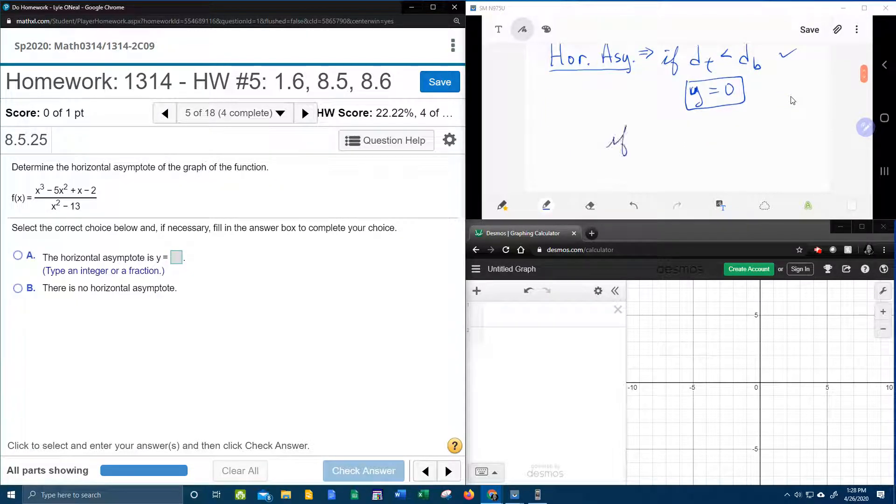If the degree of the top is greater than the degree of the bottom, then what that implies is that there is no horizontal asymptote. You just won't have one.